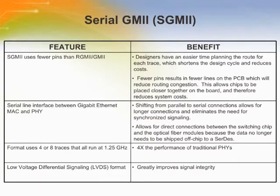Additional physical interfaces use RGMII or GMII designs with the parallel line interface between GigE MAC and PHY. These interfaces utilize 25 traces running at 125 MHz or 12 traces at 250 MHz respectively.